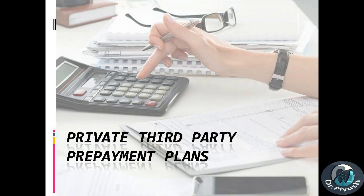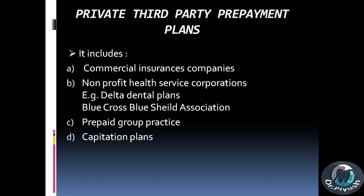Private third-party prepayment plans. It includes: A. Commercial insurance companies; B. Non-profit health service corporations, e.g., Delta Dental Plans, Blue Cross Blue Shield Association; C. Prepaid group practice; D. Capitation plans.